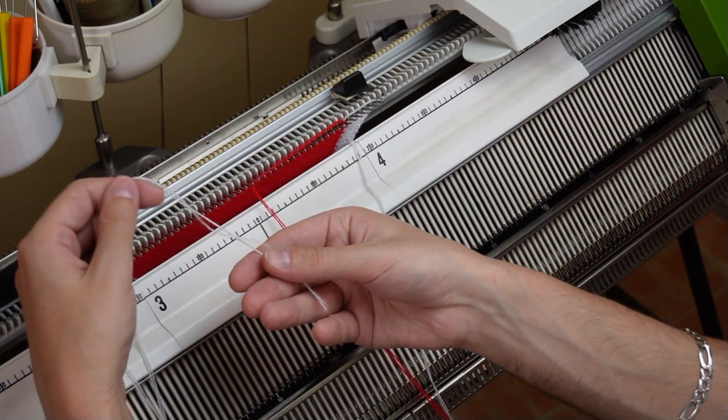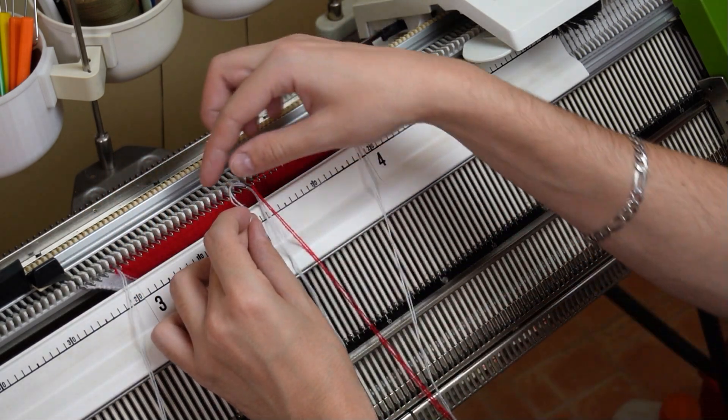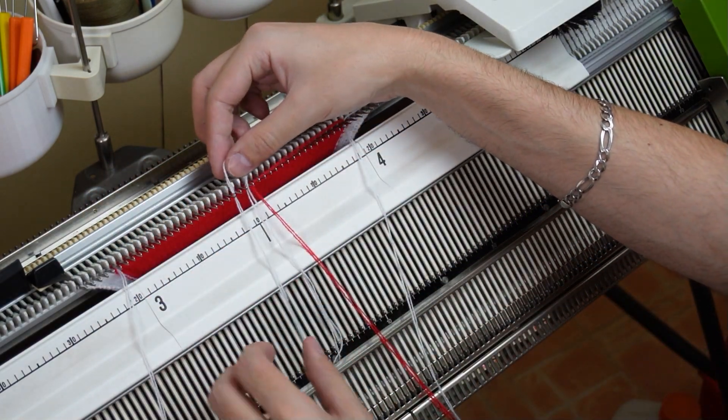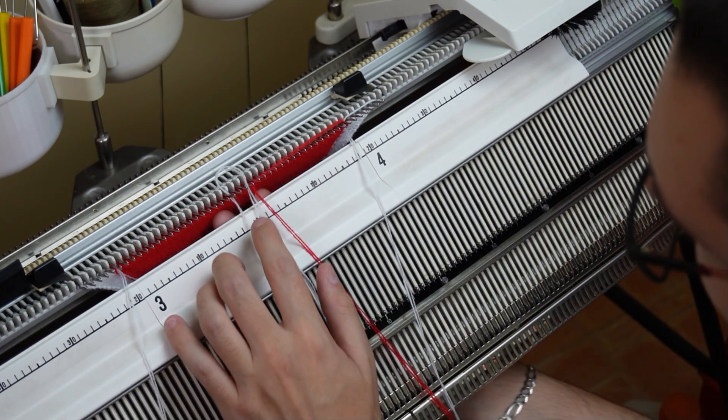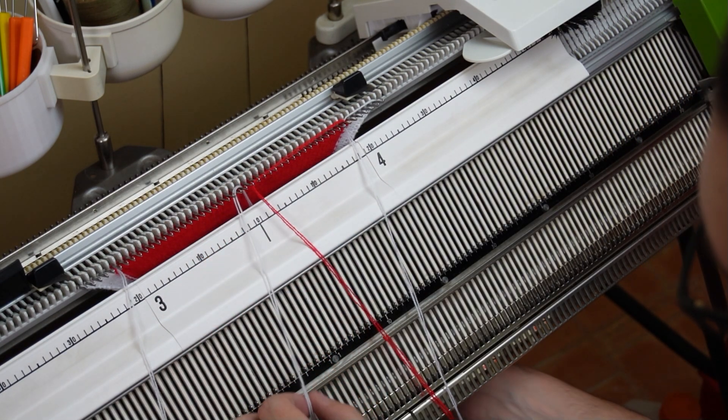The first yarn strand will be the white one. I need to have two white stitches in the center. Make sure the short end of the yarn strand is to the right. I will put the end between the pads of the machine.